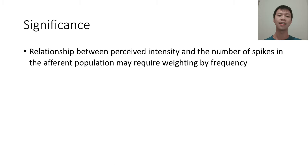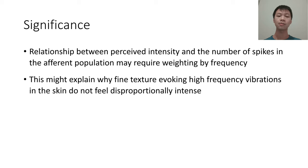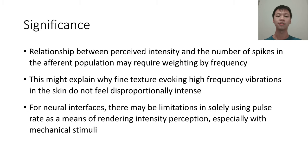Thus, we see that the relationship between intensity and the number of spikes is also moderated by the frequency. Below 100 Hz, the number of spikes in the population directly affects intensity, whereas above 100 Hz this became minimal. This could be why fine textures, which evoke high-frequency vibrations in the skin, do not feel disproportionately intense as the weighted rate model would predict. Furthermore, the use of pulse rate to render intensity perception in the case of neural interfaces has its limitations.